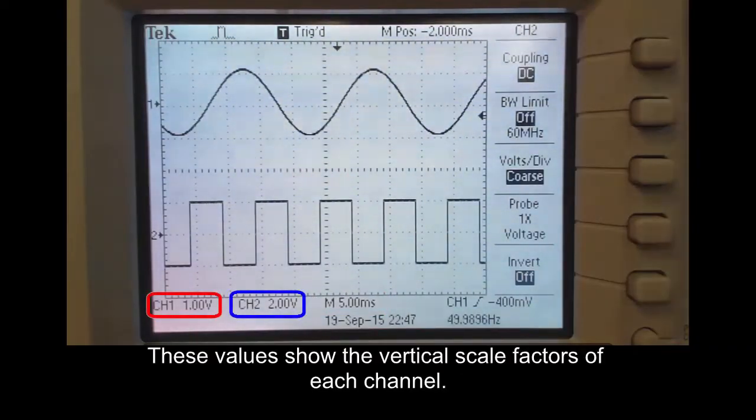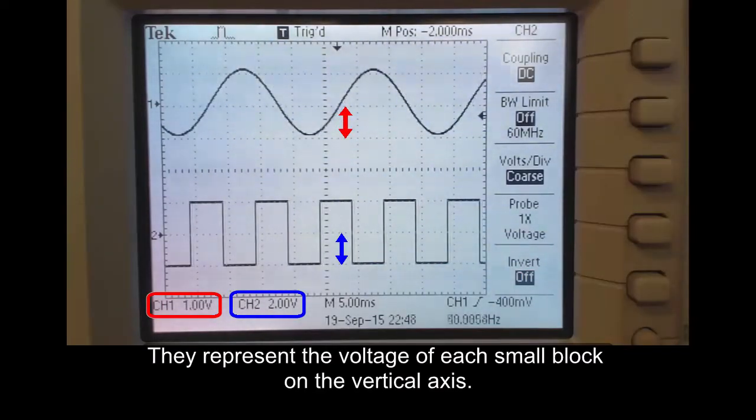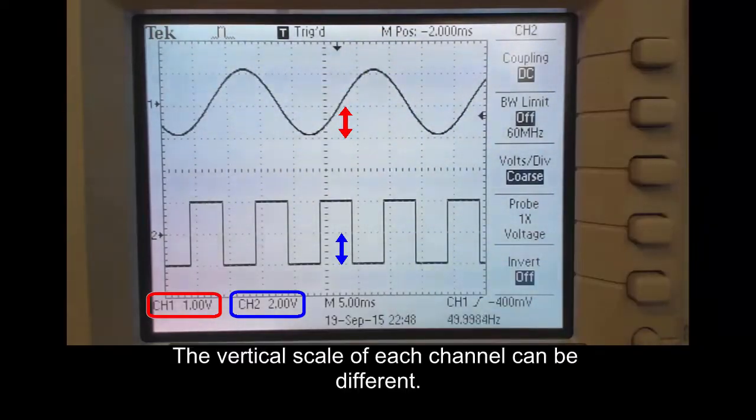These values show the vertical scale factors of each channel. They represent the voltage of each small block on the vertical axis. The vertical scale of each channel can be different.